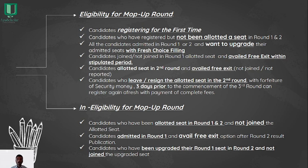Ineligible candidates for the mop-up round: First, candidates who have been allotted a seat in Round 1 and Round 2 but did not join the allotted seat. Second, candidates admitted in Round 1 who avail the free exit option after Round 2 result publishing — if they avail free exit after Round 2 results, they cannot attend the mop-up round. Third, candidates who had their Round 1 seat upgraded in Round 2 but did not join the upgraded seat. If they had joined the upgraded seat, they would have been eligible for the mop-up round.